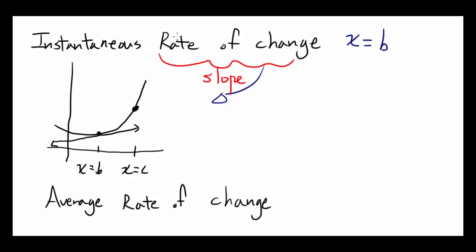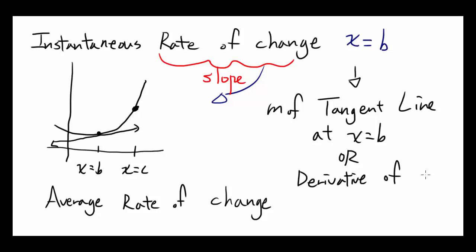So you can think of instantaneous rate of change at x equals b as the slope of tangent line at x equals b or the derivative of our function at x equals b. Derivative and slope of tangent line is the same thing.